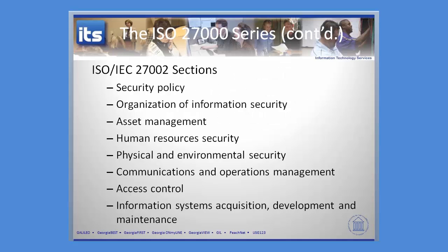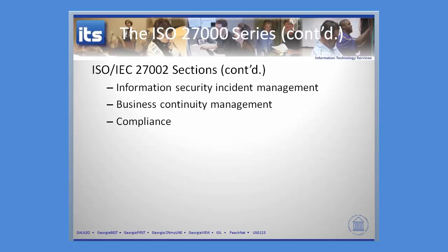Here's a list of some of the sections associated with ISO 27000. You have security policy, organization for information security, asset management, human resource security, physical and environmental security, communications and operations management, access control, and the acquisition, development, and maintenance of information systems. You've also got information security, business continuity management, and compliance.